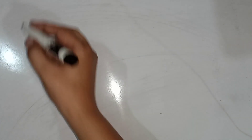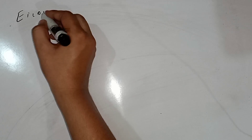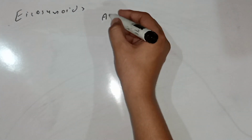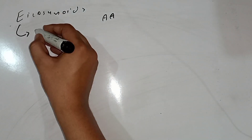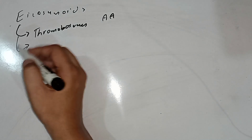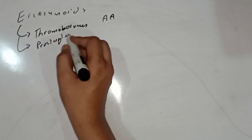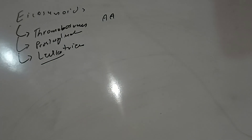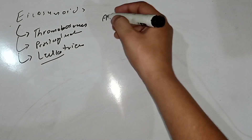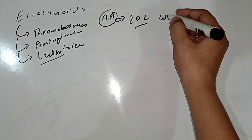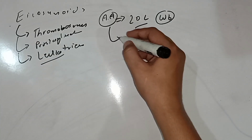In this video we are going to discuss eicosanoids. Eicosanoids are derivatives of arachidonic acid and include three principal classes of compounds: thromboxanes, prostaglandins, and leukotrienes. Arachidonic acid is a 20-carbon unsaturated fatty acid. It is also one of the omega-6 fatty acids and is found in cellular membranes.